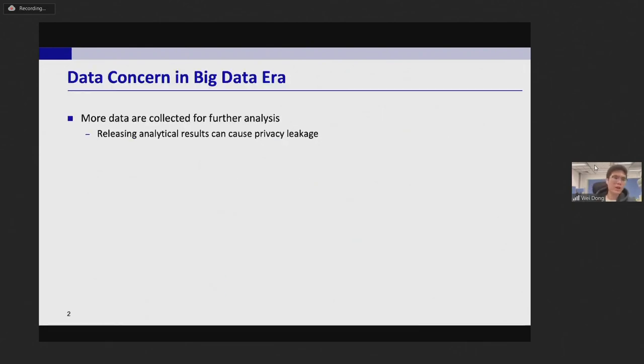In the big data era, more and more data are collected by organizations for further analysis. However, releasing the query results directly can cause privacy leakage. For example, U.S. Census Bureau collects people's data and then releases population statistics.